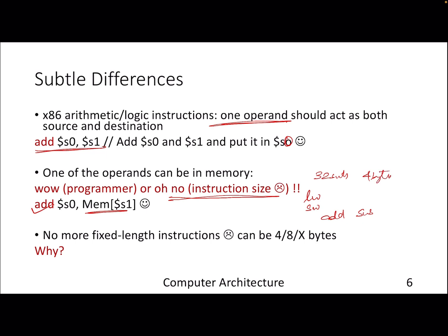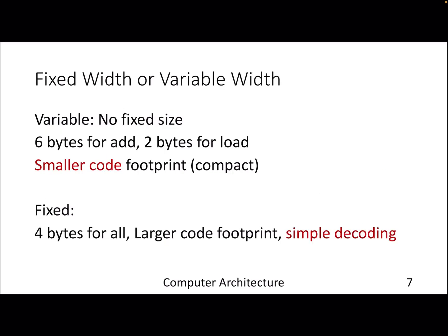But now with x86 it's no more a fixed length instruction ISA. It can be a four byte, eight byte, or maybe X bytes, right? Because we'll see that the decoding or the instruction format is not the same for all the instructions, which was the case for MIPS.